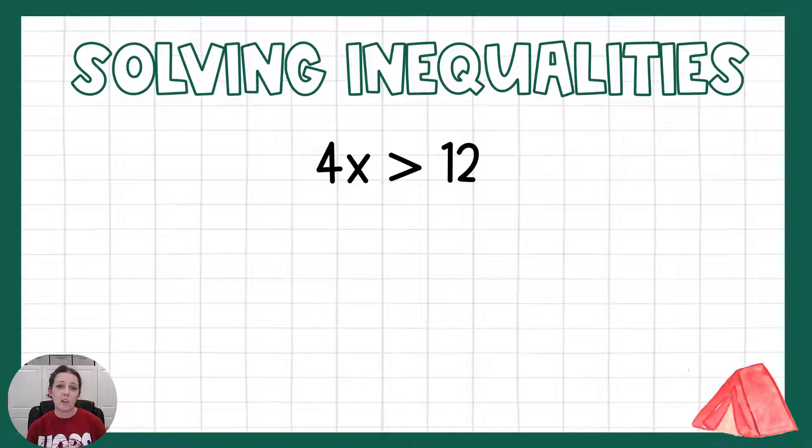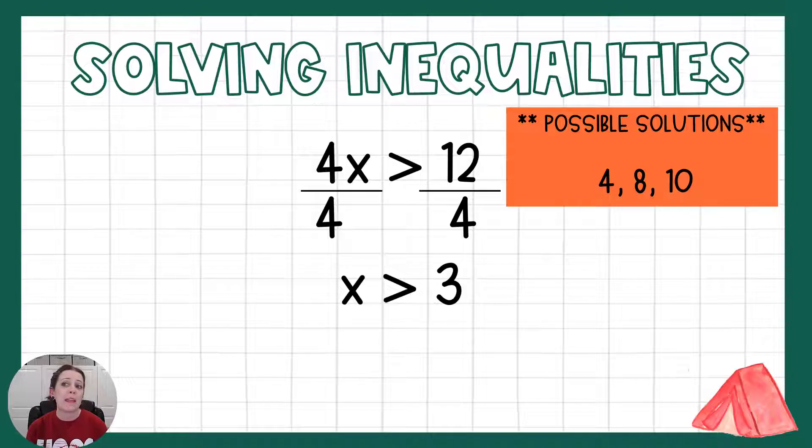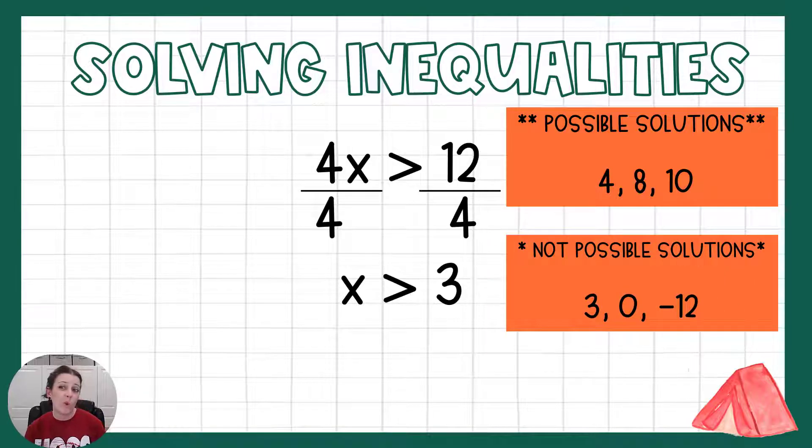4x is greater than 12. Again, we're going to solve this just like if that greater than sign were an equal sign. So 4x means 4 times x. We're going to do the opposite or the inverse and divide by 4 on both sides. And so my solution here is x is greater than 3, meaning x can literally be any number bigger than 3. Some possible solutions would be 4, 8, and 10. Those are all bigger than 3. Some things that are not a possible solution would be 3 or 0 or even negative 12. Those numbers are not greater than 3.